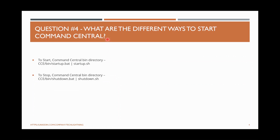Moving on to the next question: what are the different ways to start Command Central? Command Central is mainly for managing and monitoring all your applications. You can configure all different components for different environments and see which applications are currently up and running. To start Command Central, go to the Command Central path — generally cc/commandcentral/bin — where you have a startup.bat for Windows or startup.sh for Linux. Similarly, shutdown scripts are available there for shutting down Command Central.